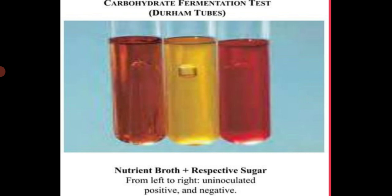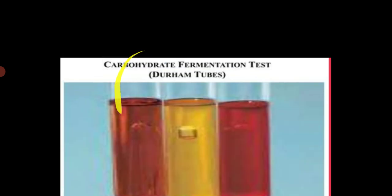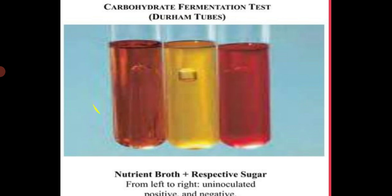For a nutrient broth with a respective sugar — glucose, lactose, mannitol, sucrose, or any other — the un-inoculated medium has a red color initially. After inoculation and incubation, if the organism has ability to ferment glucose, the color of medium changes to yellow. If Andrade indicator is used, the un-inoculated medium is colorless, and after incubation, if the organism can ferment glucose, the color will be pink. A negative result shows no pink, no yellow color, and no gas bubble in the Durham tube.